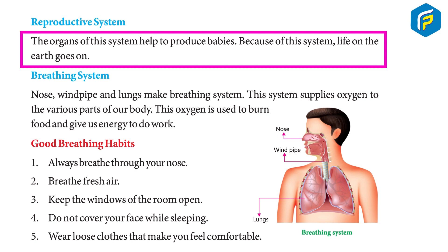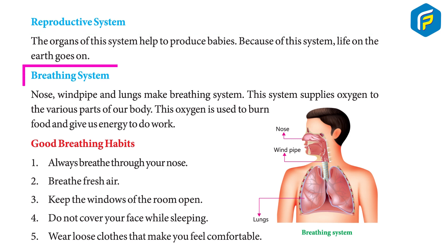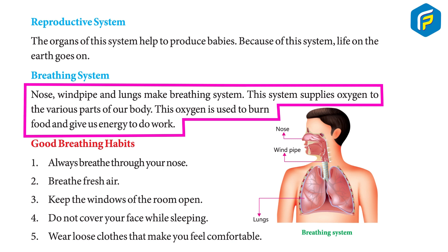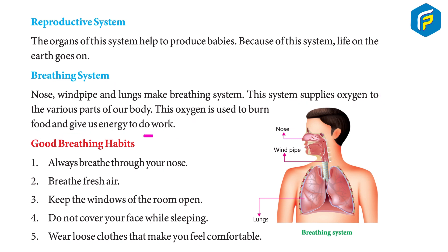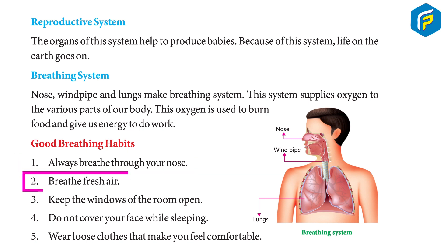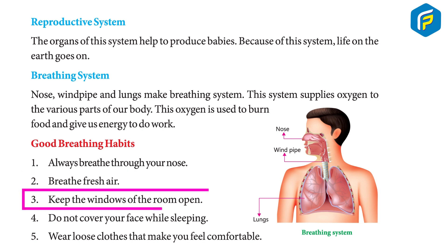The reproductive system: the organs of this system help to produce babies; because of this system, life on Earth continues. The breathing system: the nose, windpipe, and lungs make up the breathing system. This system supplies oxygen to the various parts of our body. This oxygen is used to burn food and give us energy to do work.